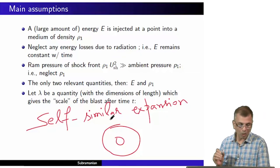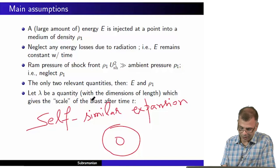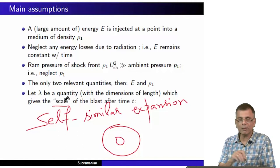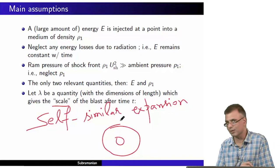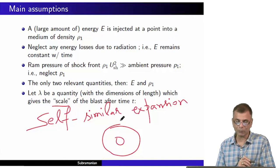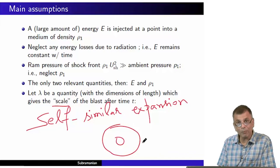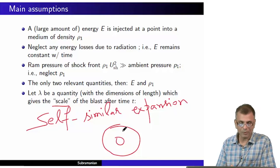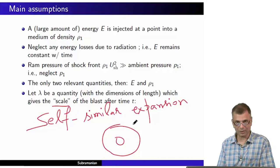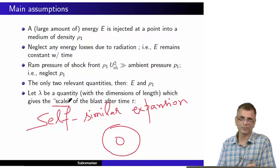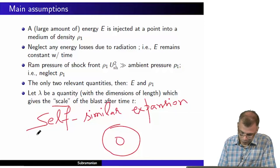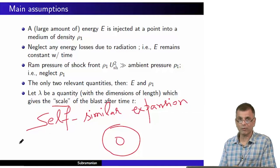All that matters is the scale of the blast — some kind of multiplying factor. As long as the expansion is self-similar, you don't need to worry about the change in shape of the shock front. You know the shape is the same as before; you only need to know how much larger it is — 10 times, 100 times? That's the only thing you need to know.